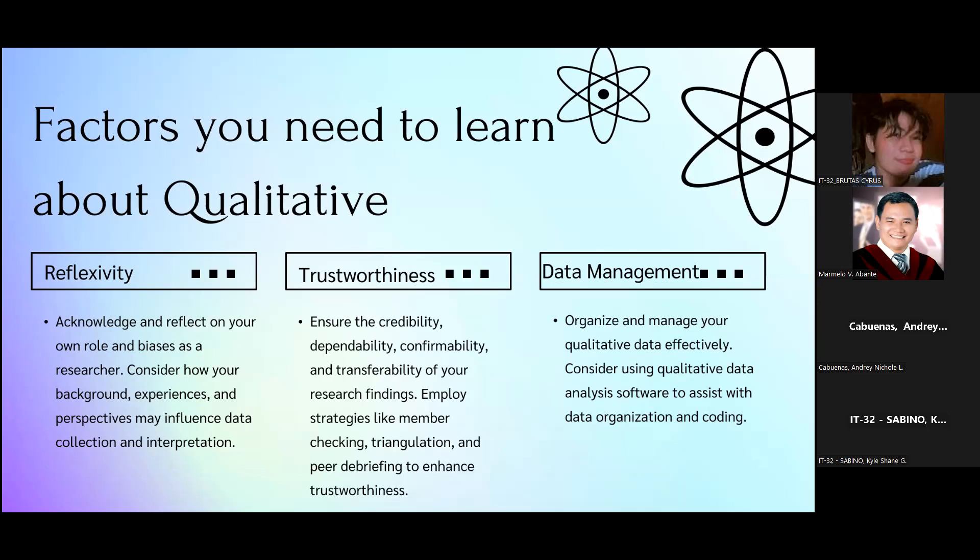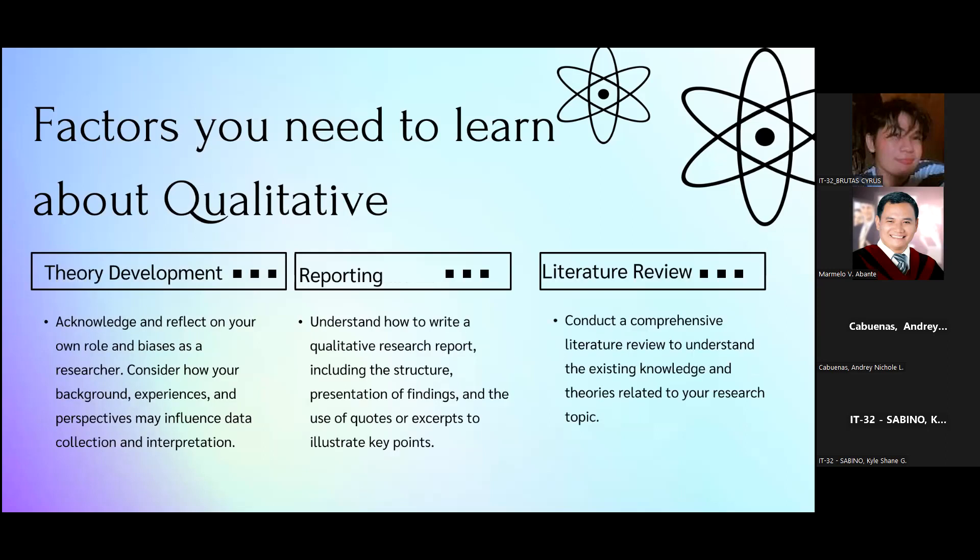Flexibility: it is to acknowledge and reflect on your own role and biases as researchers. Consider how your background, experiences, and perspectives may influence data collection and interpretation. Trustworthiness: ensure the credibility, dependability, confirmability, and transferability of your research findings. Employ strategies like member checking, triangulation, and peer debriefing to enhance trustworthiness. In data management, organize and manage your qualitative data effectively. Consider using qualitative data analysis software to assist with data organization and coding.